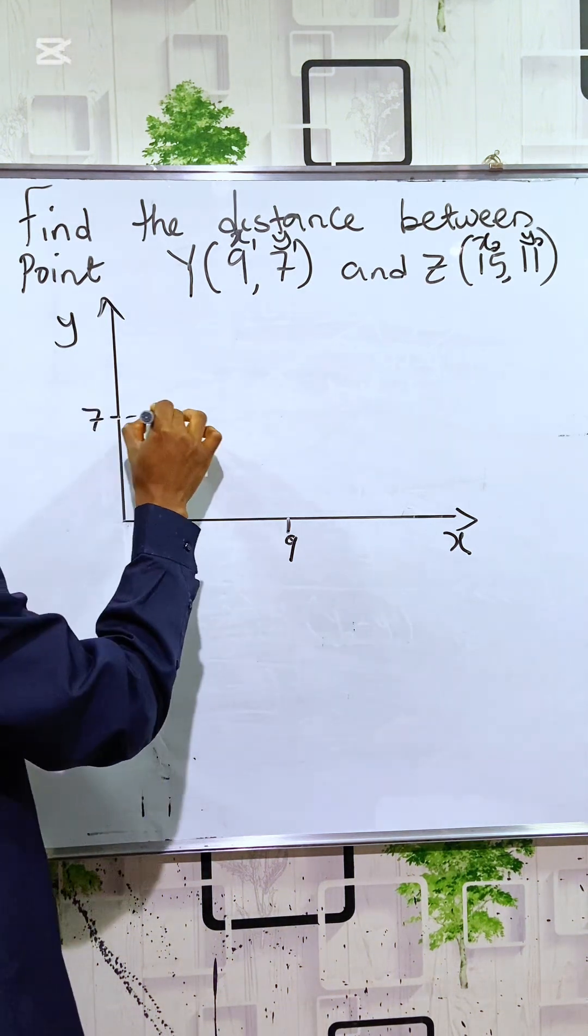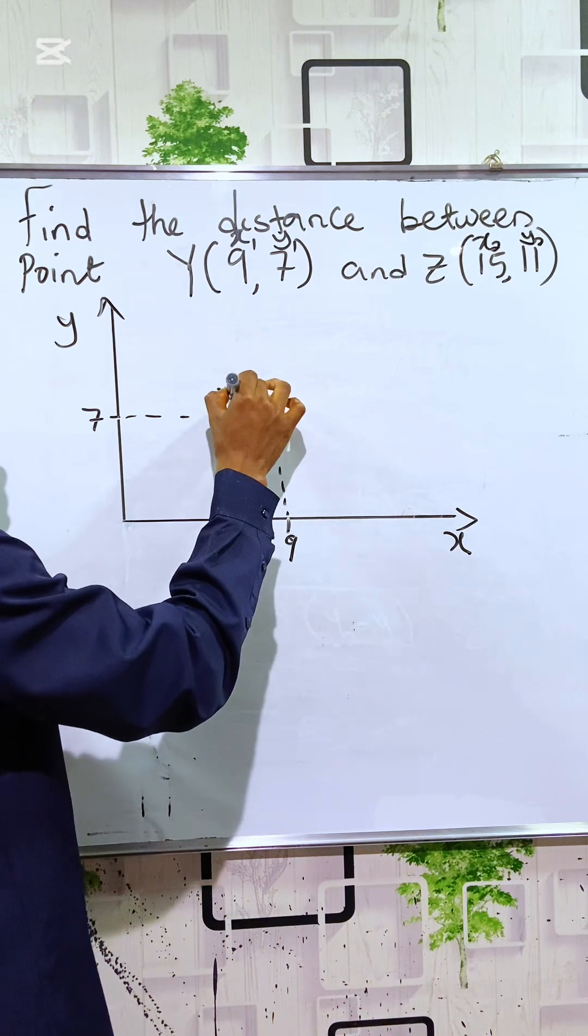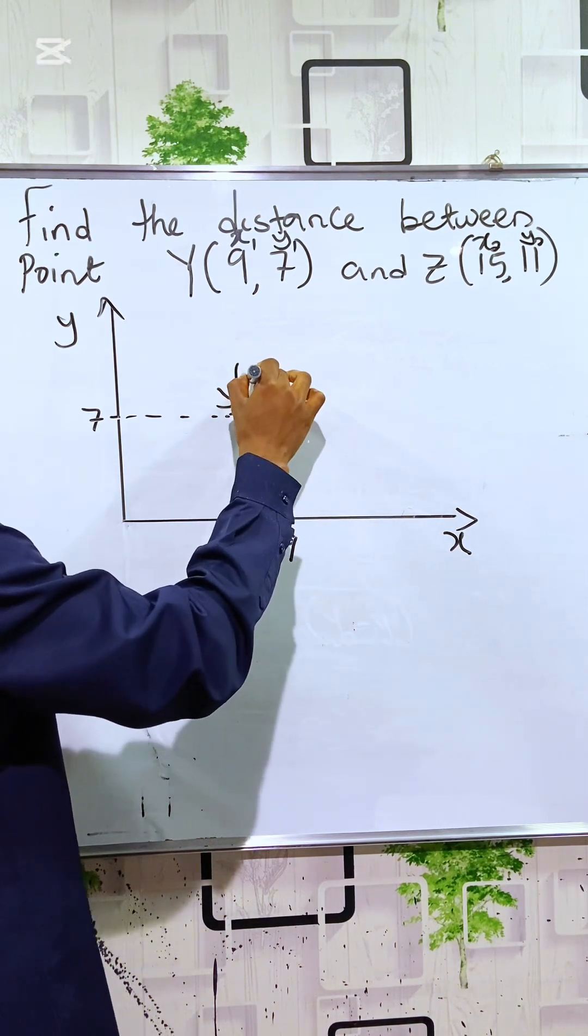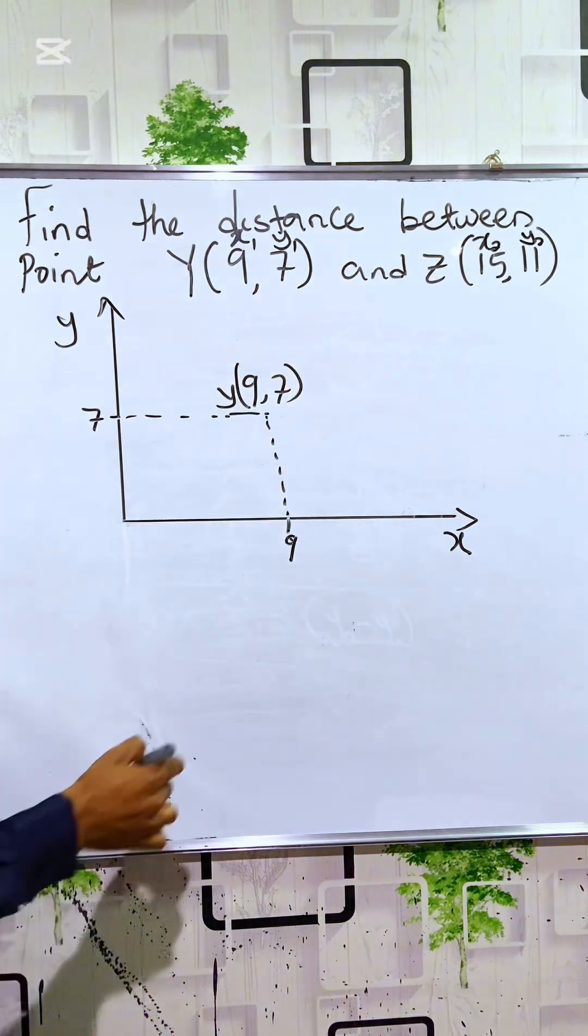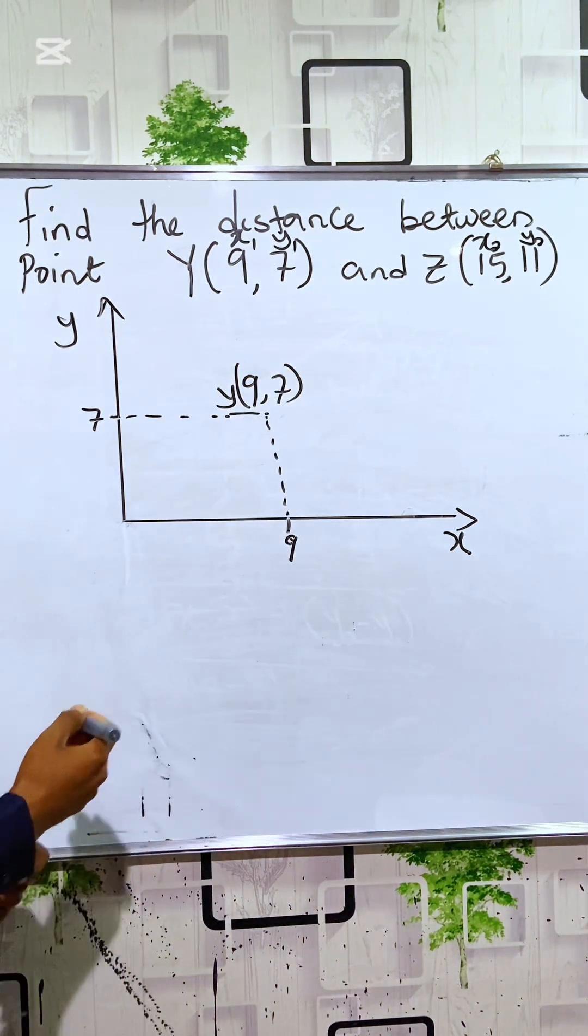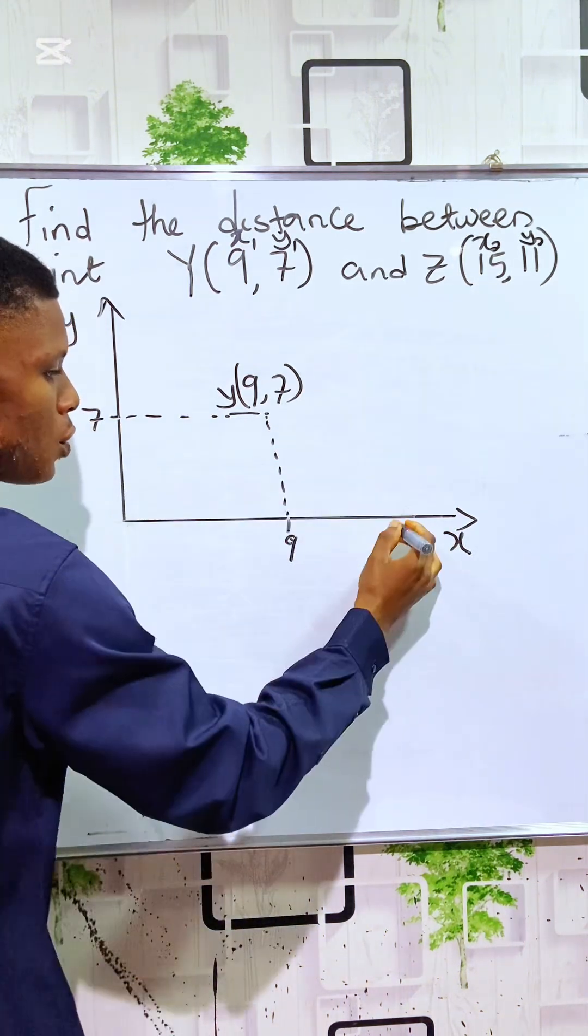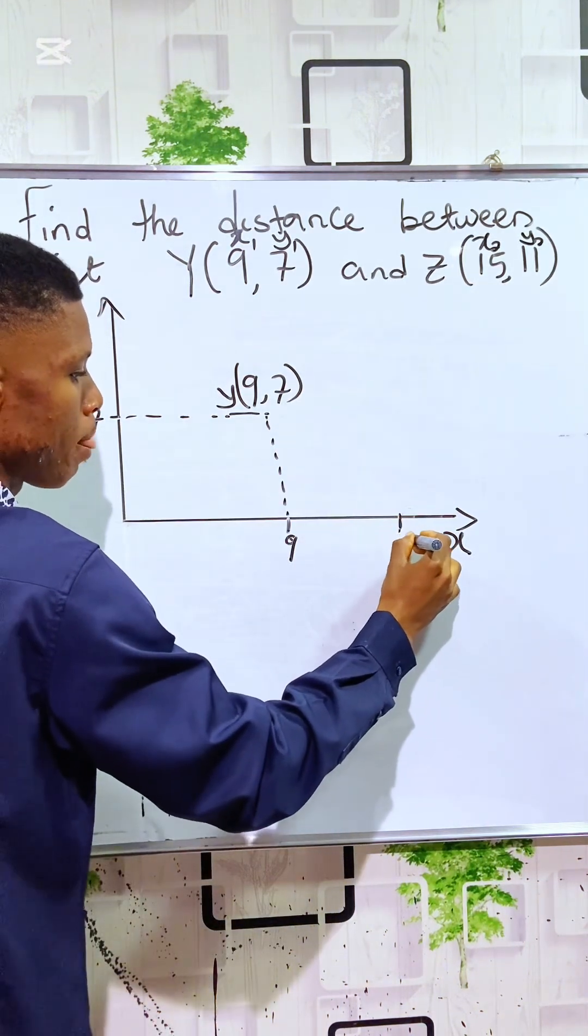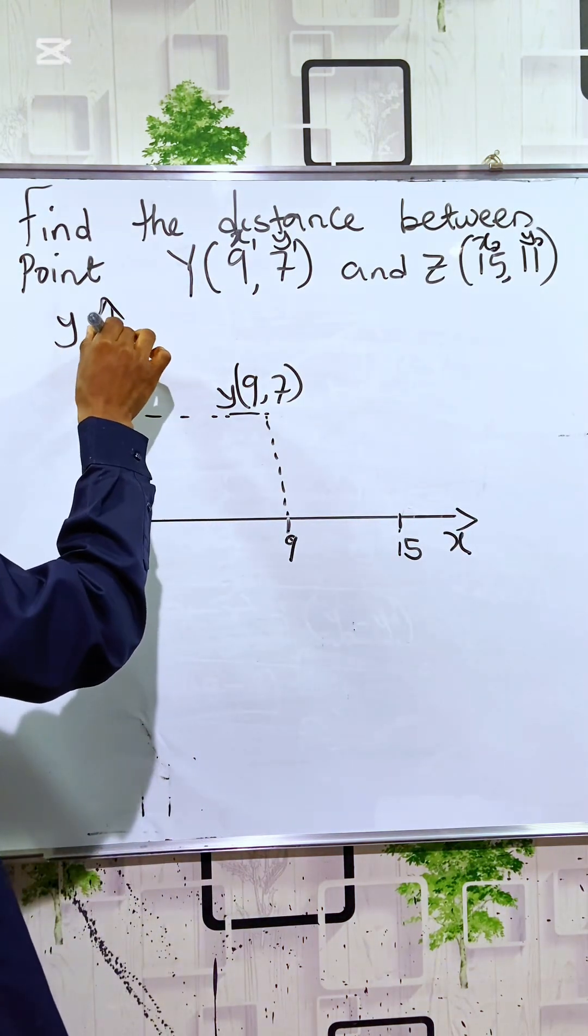So we can now locate point Y to be at this particular point. This is Y, meaning 9, 7. Then let's locate point Z. Point Z has X to be 15, so here can be my 15, and has Y to be 11. Here can be my 11.